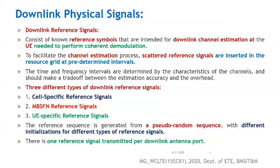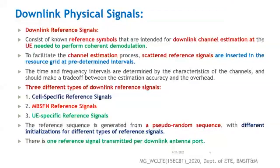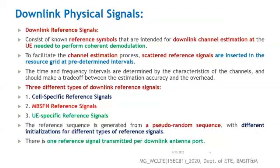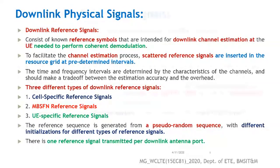The reference sequence is generated from a pseudo-random sequence, with different initialization for different types of reference signals. Only one reference signal is transmitted per downlink antenna port. In LTE, there are four antenna ports: antenna ports 0, 1, 2, and 3, and for each antenna port only one reference signal is transmitted.